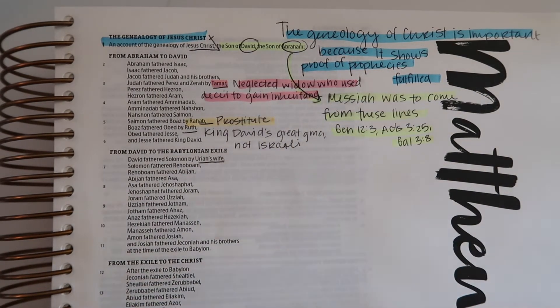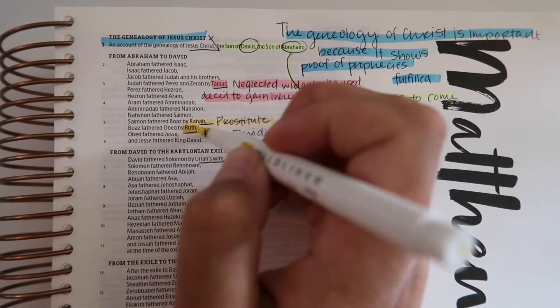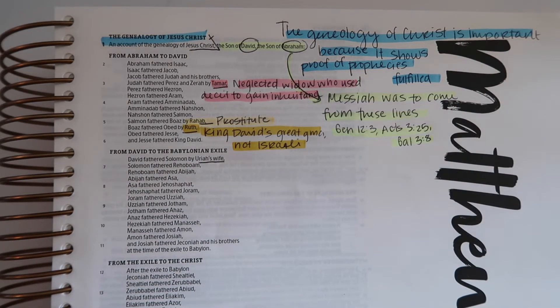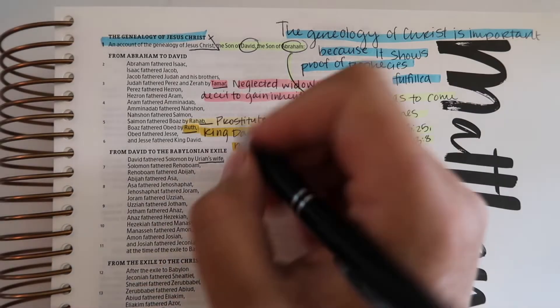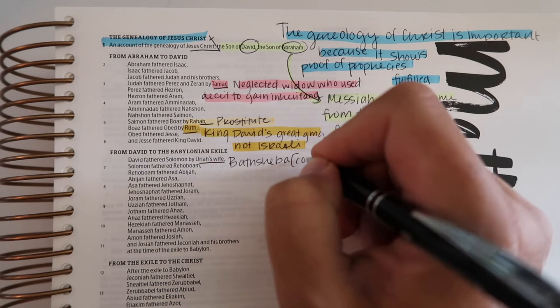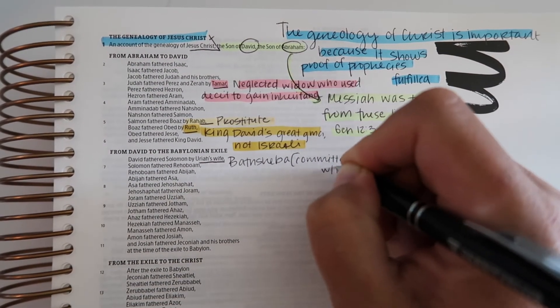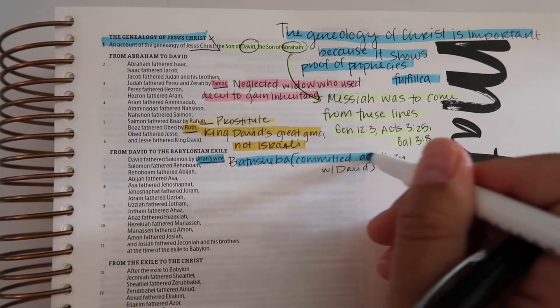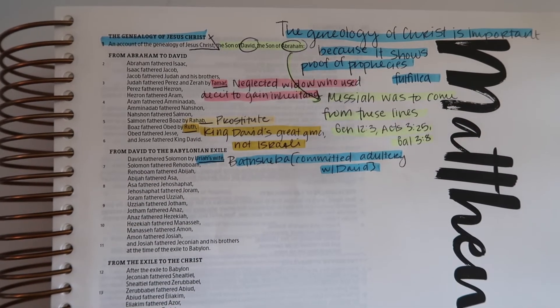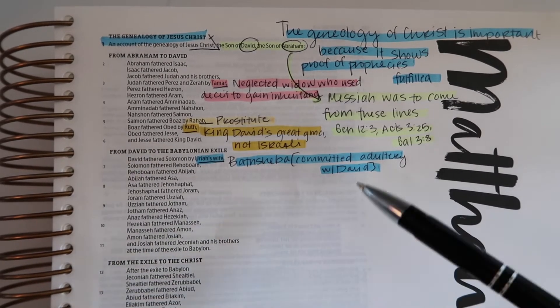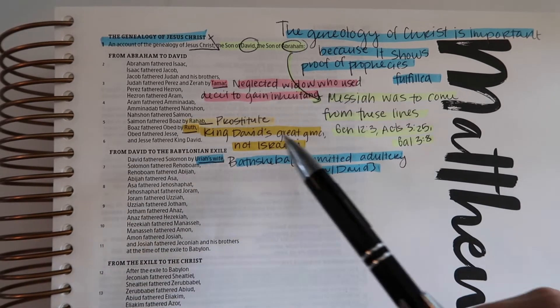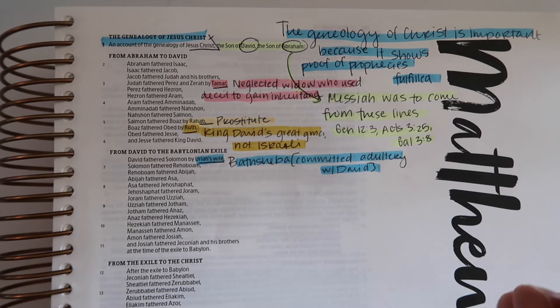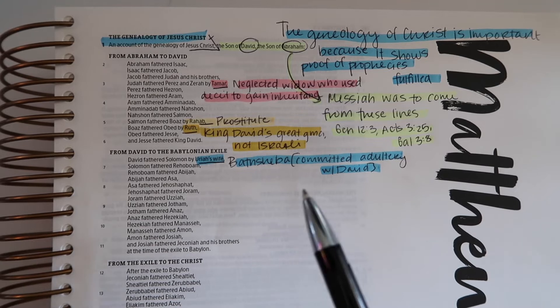Ruth was King David's great grandmother. She was not Israeli. And then Uriah's wife was actually Bathsheba and she committed adultery with David. So what do these four women have in common? Well, three of them are sinners - one of them was deceitful, one of them was a prostitute, one of them was an adulteress. And Ruth wasn't of Israeli descent.